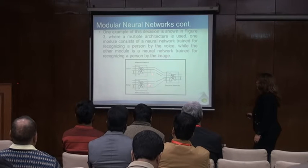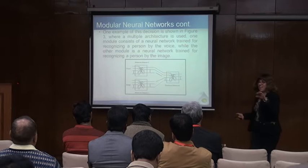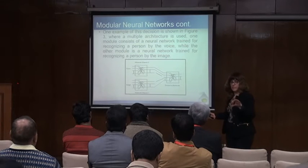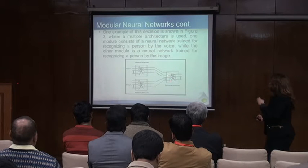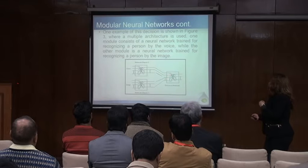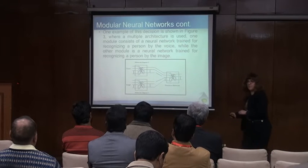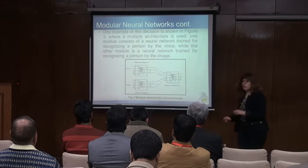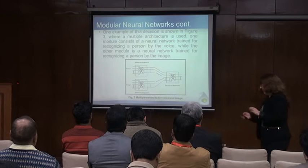But if one module says it is person 2 and another says person 3, they do not agree — how can we manage this? This is important: it depends on how you construct your model. For example, if you say you can always more easily recognize a person by the voice, you give that model more relevance than the other model. And this we can capture in the system — that's the concept of the modular neural network.